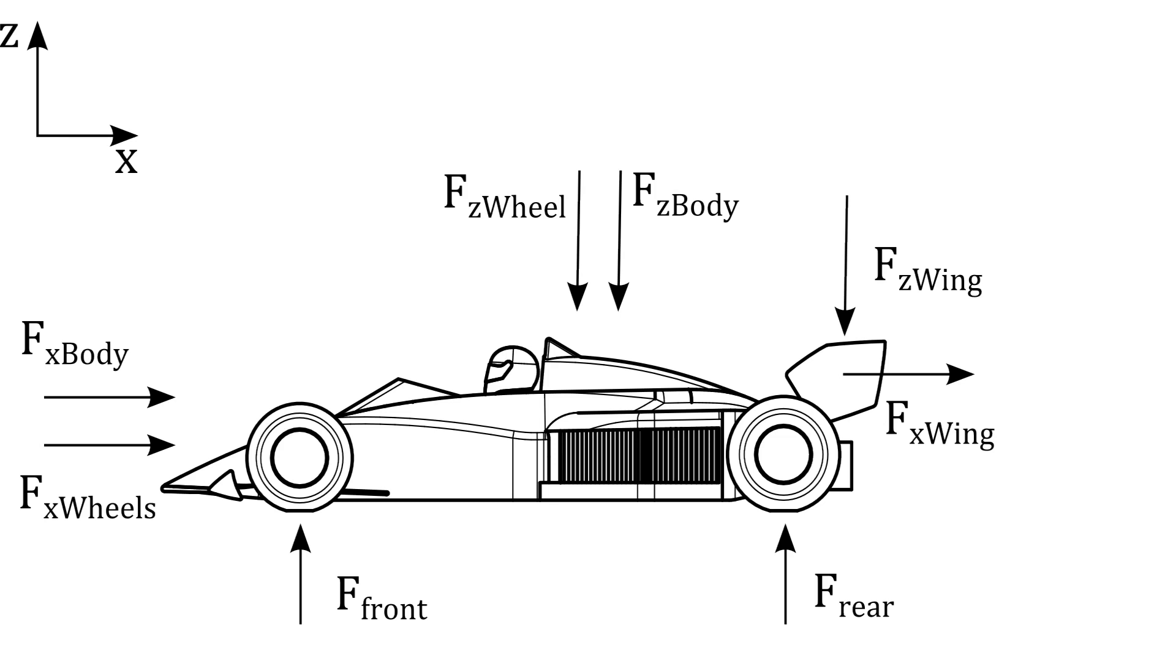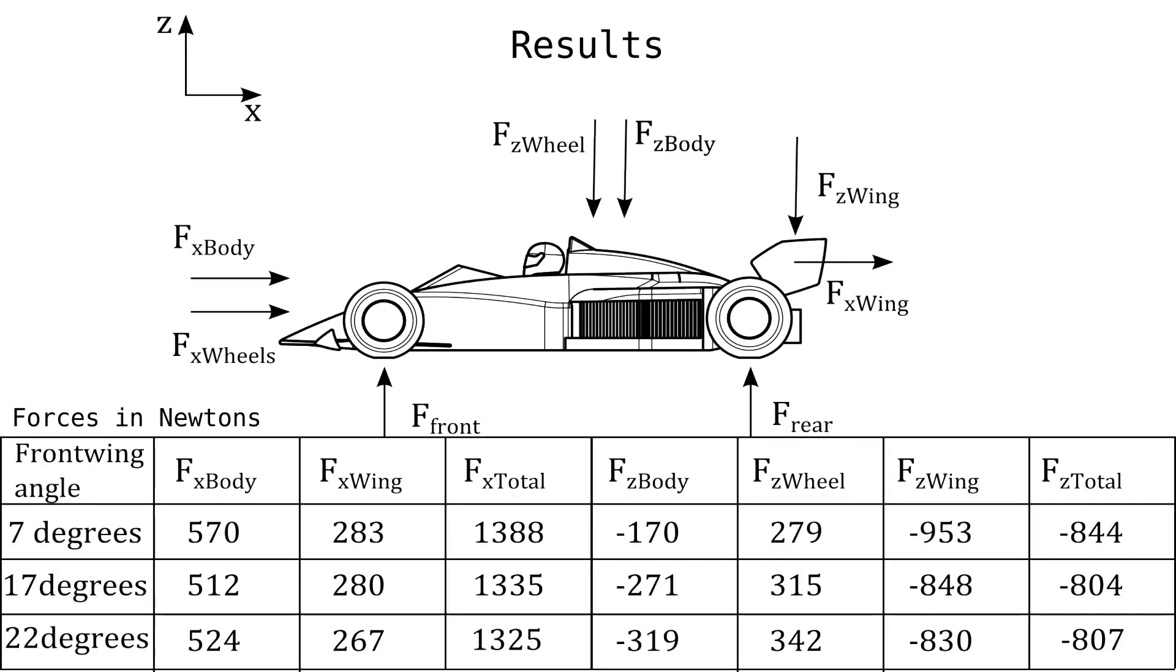Three simulations were run with different front wing flap angles, starting with 7 degrees forming the baseline, then the flap was increased to 17 because the lift numbers were so bad, and then subsequently to 22 degrees. Looking at all the online images of the BT-52, an angle more than this is unlikely.